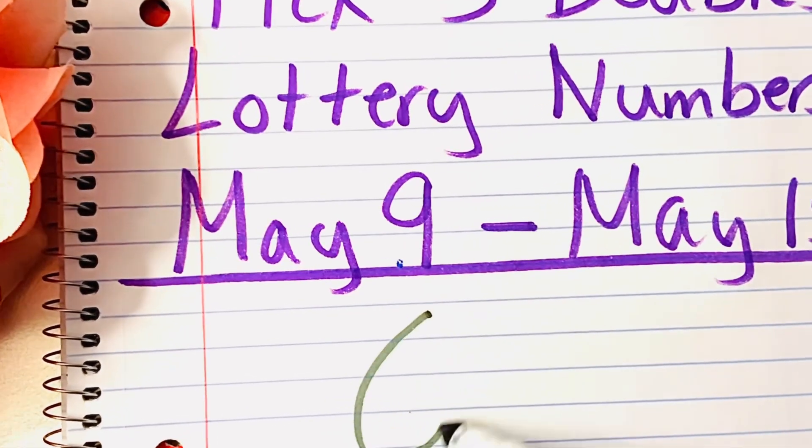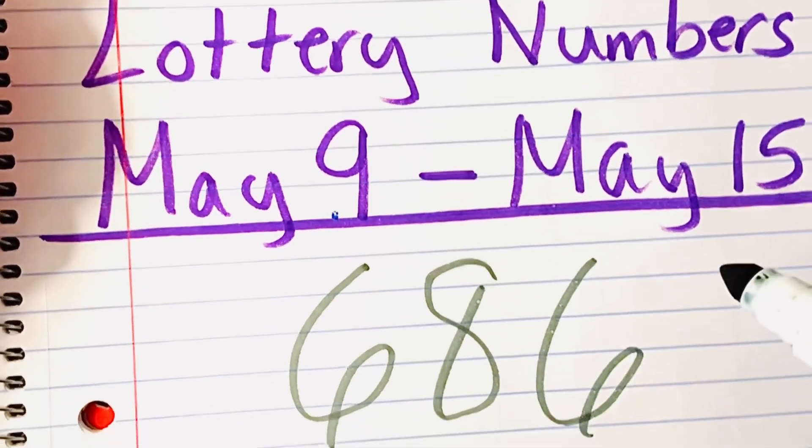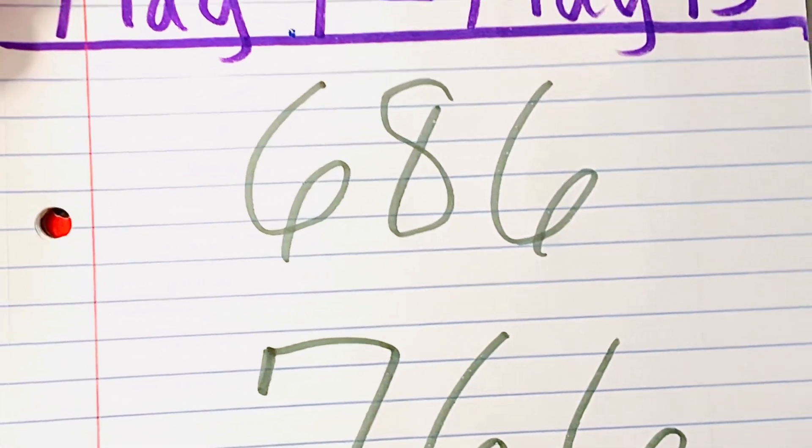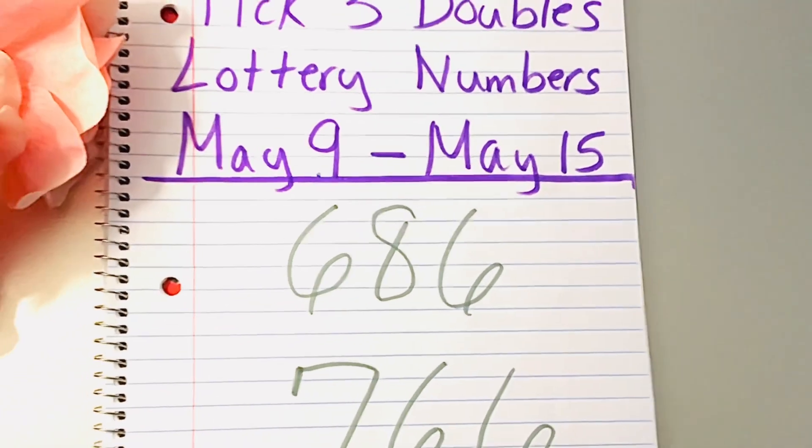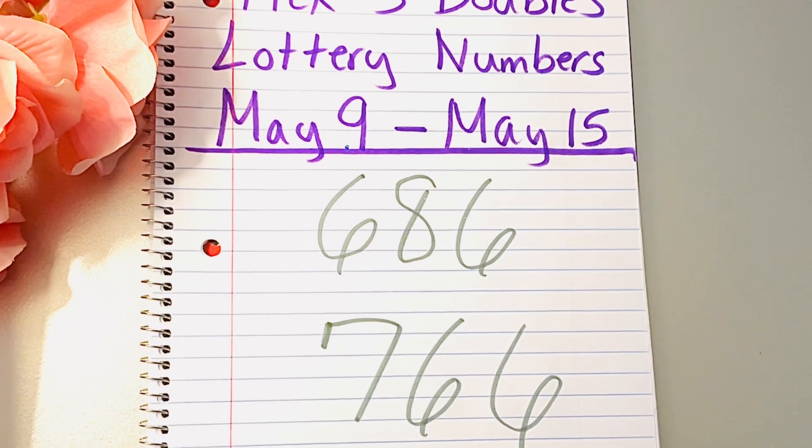We have 686 and 766. And the 7 and 8 are one-off from each other. So if you're picking sixes, play both of these numbers together.